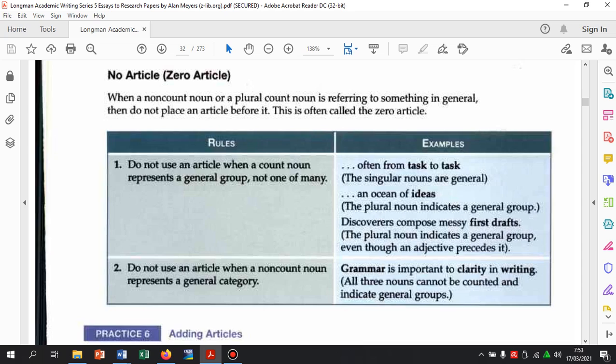Kita tidak boleh menggunakan artikel atau tidak perlu menggunakan artikel pada saat apa? Ketika sebuah non-count noun, kata benda yang non-countable, atau plural countable noun, kata jamak yang plural, is referring to something in general. Ketika itu mereferensikan atau merujuk kepada hal yang bersifat umum, jangan letakkan artikel sebelumnya. Jadi, jangan pernah taruh artikel sebelum kata tersebut.